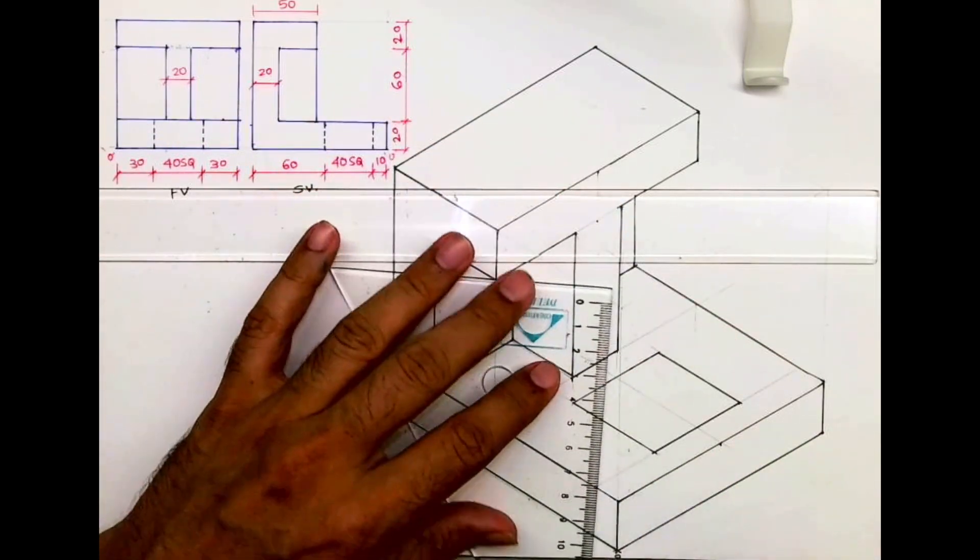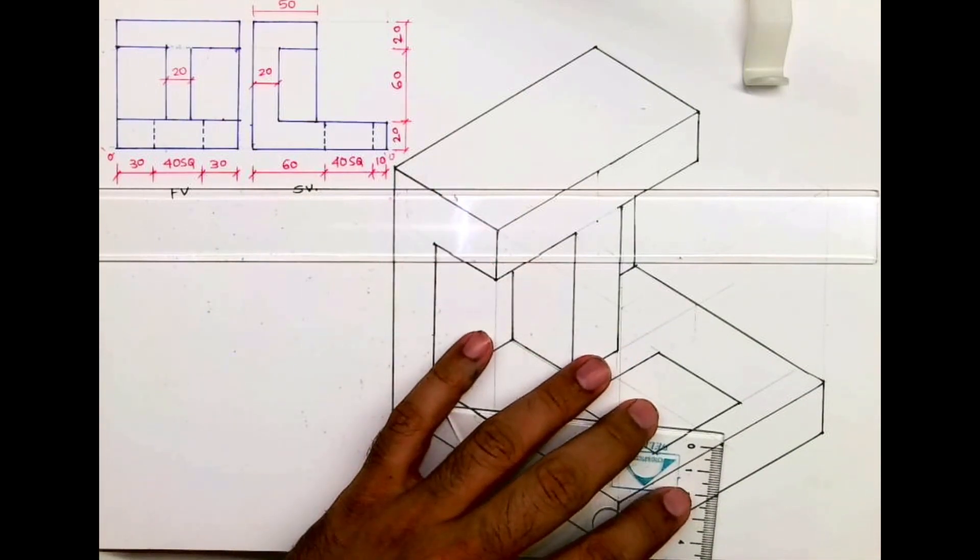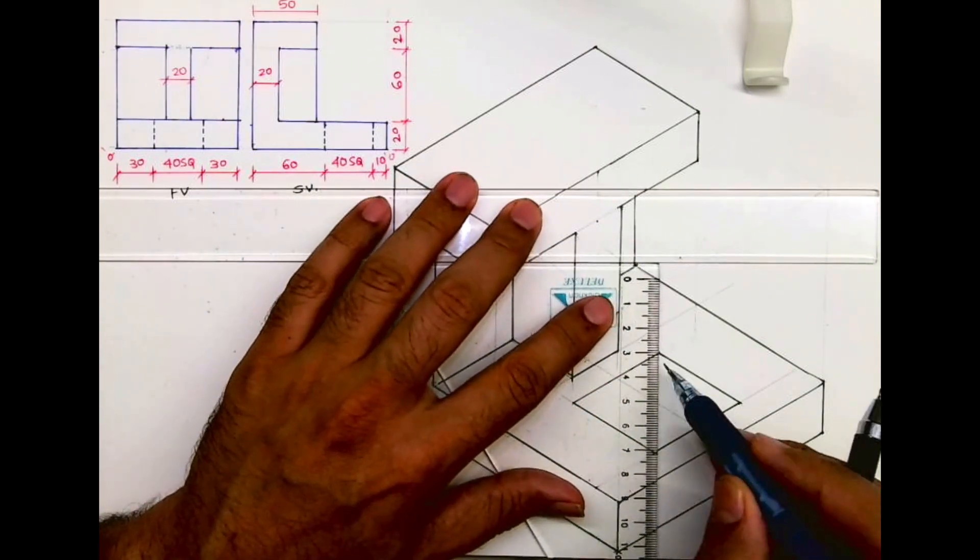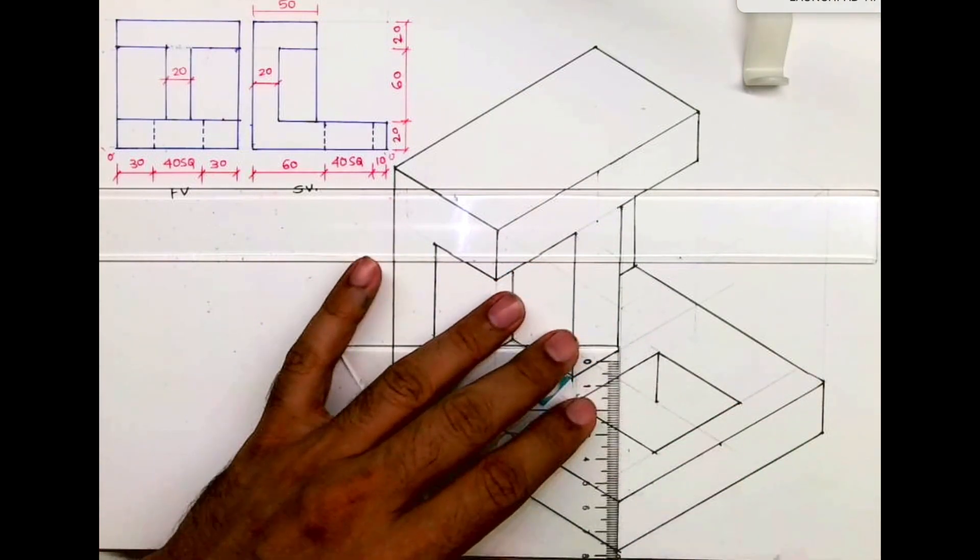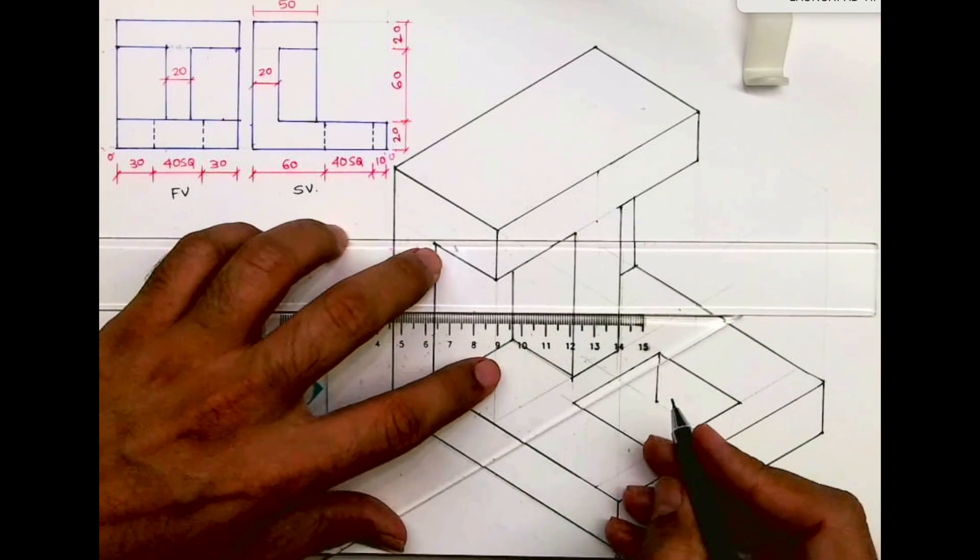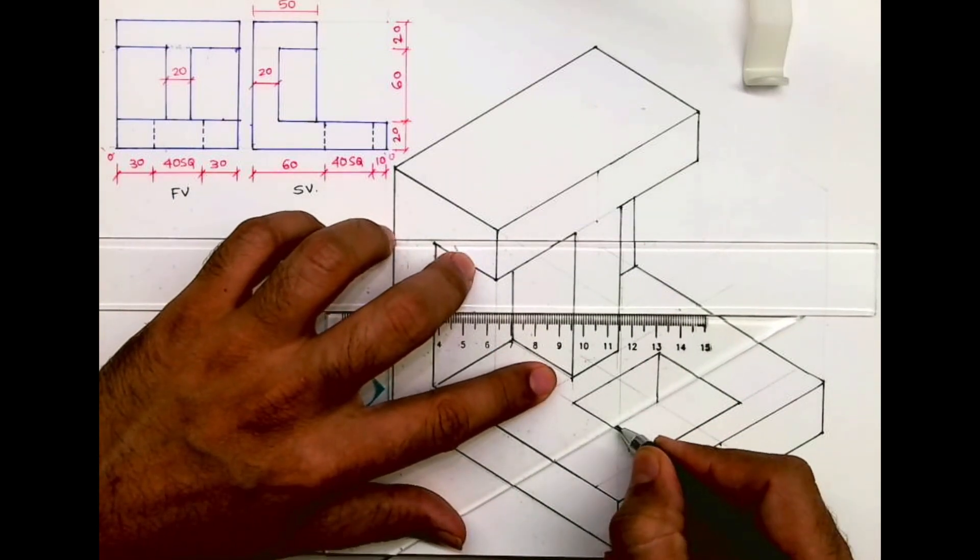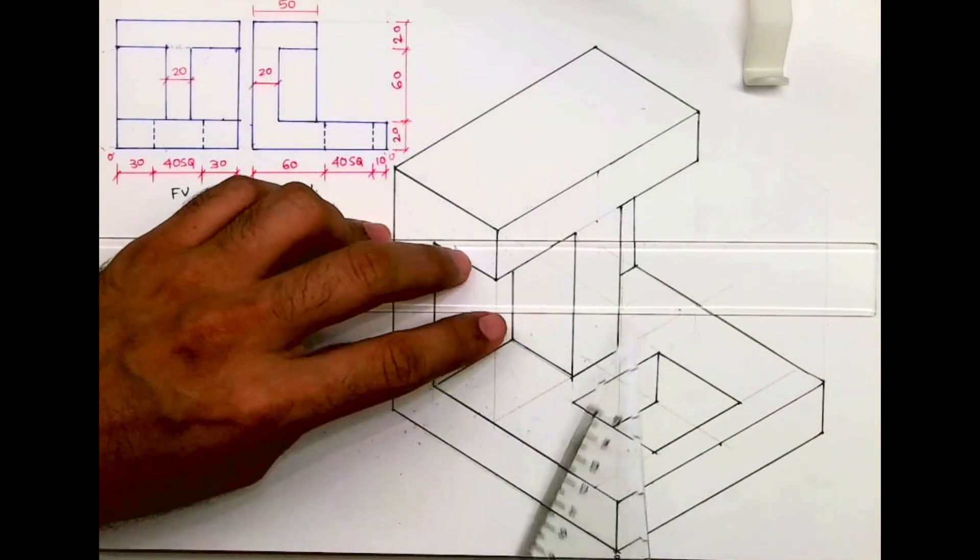After this, you go down by 20 from all this point to draw the depth. So by doing this we have completed this isometric. I hope you people have understood this. Thank you.